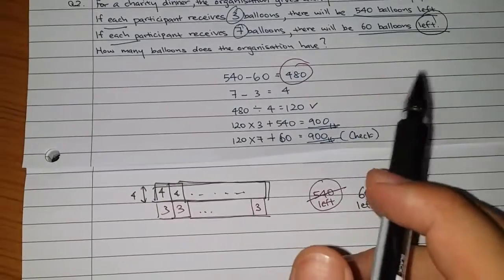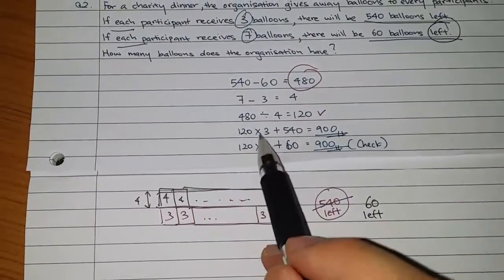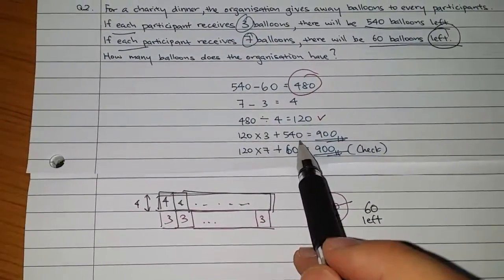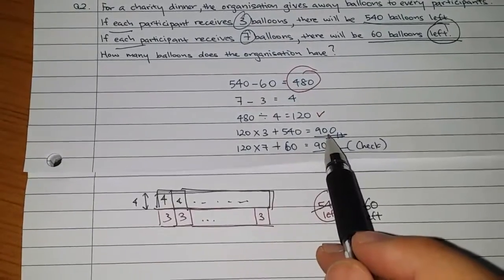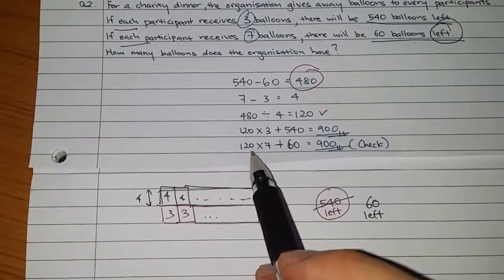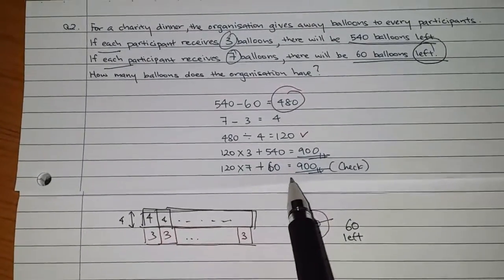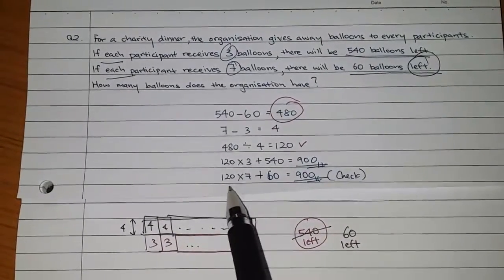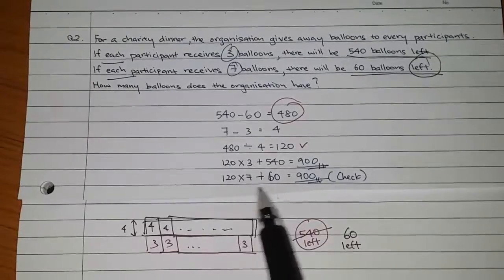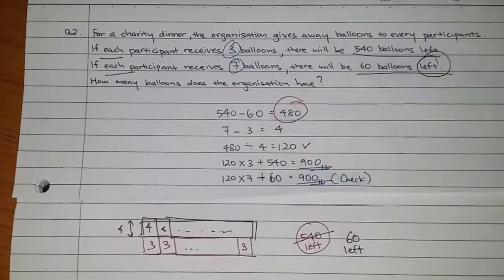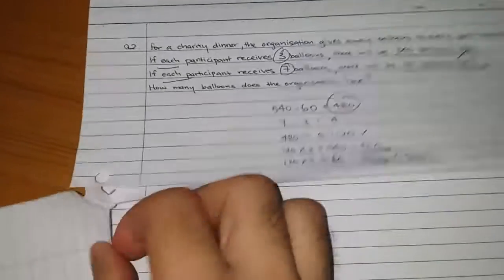And then I will do the normal working. 120 times 3, I have 540 left after giving. That's how I get 900. Same thing, double check. 120 participants times 7 balloons, I'm left with 60. So after giving out this 7 balloons each, I'm left with 60. That's why I plus. And that's my answer, 900. Alright, so I hope you understand this question.